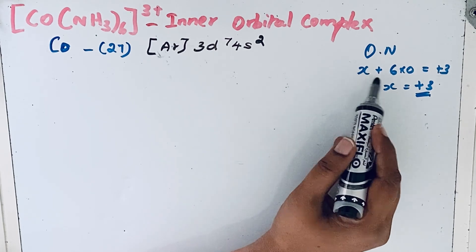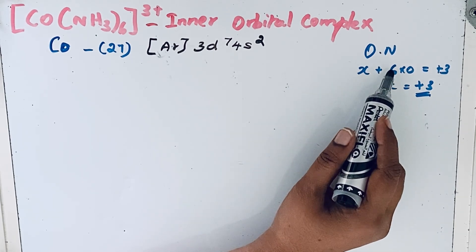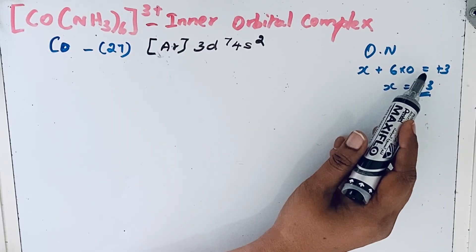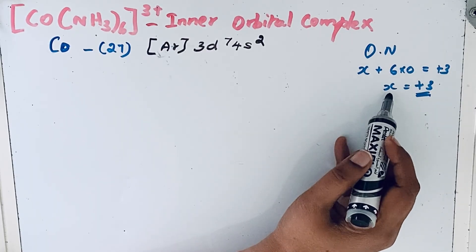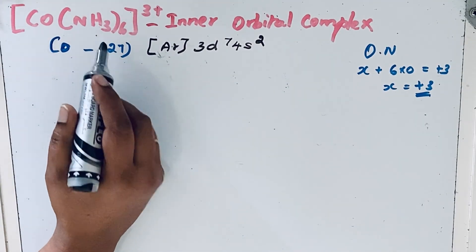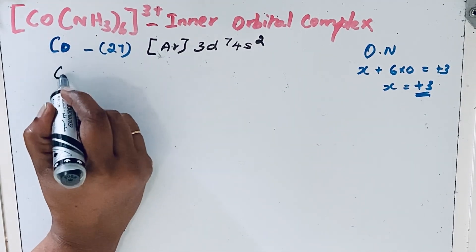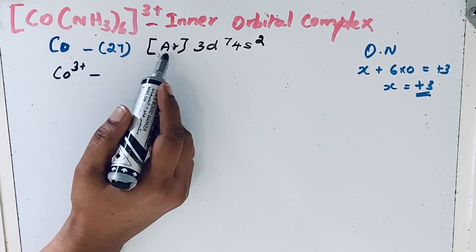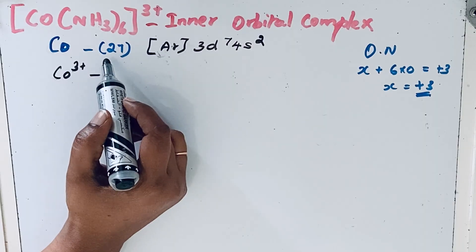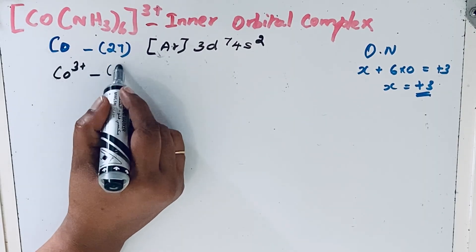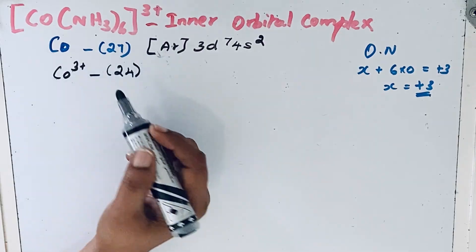We can keep cobalt as x. NH3 is a neutral ligand, so x + 6(0) = +3, therefore x = +3. The oxidation state of cobalt is +3, so cobalt is in the 3+ state. The number of electrons: 27 minus 3 equals 24 electrons.